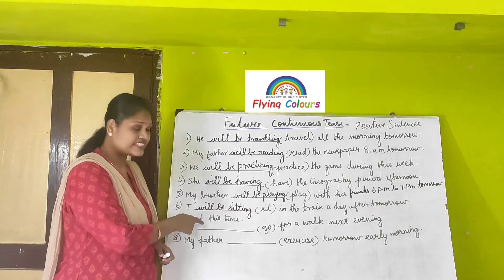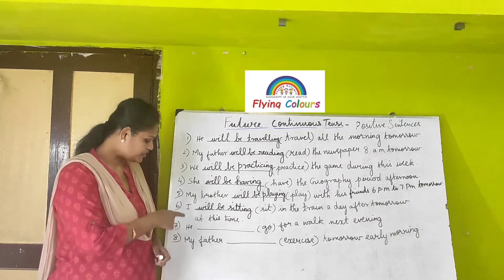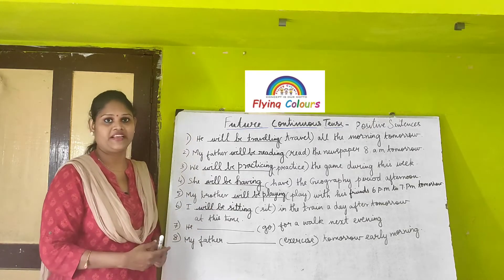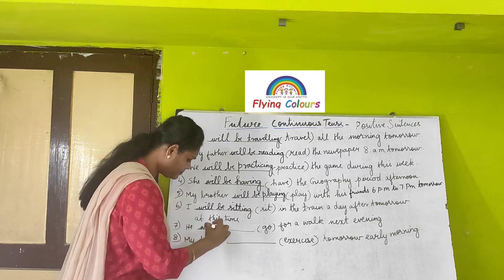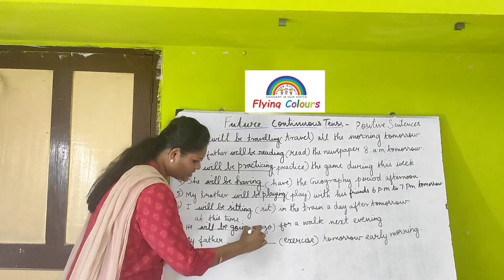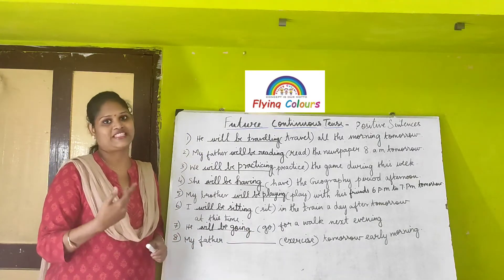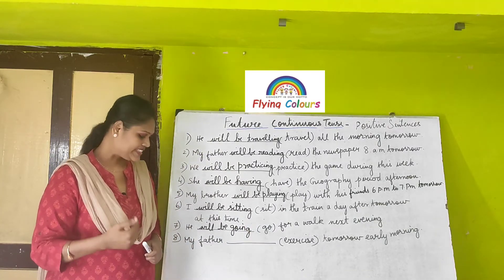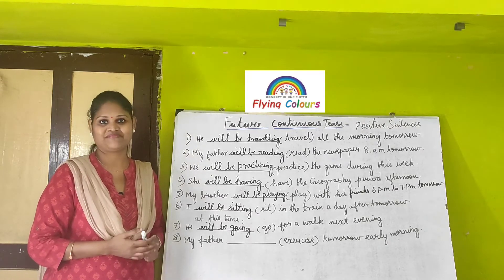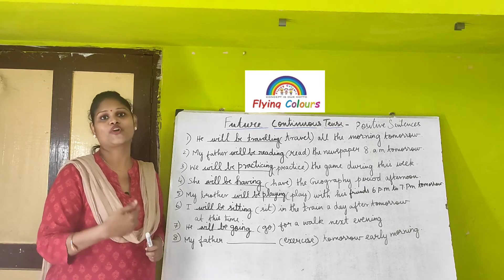Next: 'He ___ go for a walk next evening.' Applying the formula: 'He will be going for a walk next evening.' 'Going' is the present participle of the main verb 'go.' Then: 'My father ___ exercise tomorrow early morning.' So: 'My father will be exercising tomorrow early morning.'